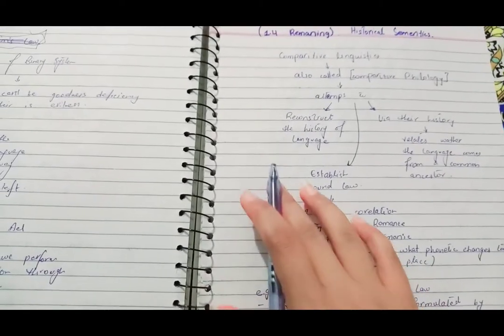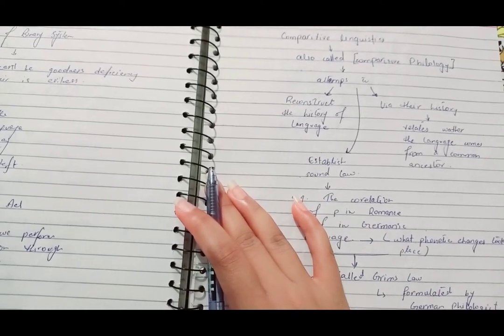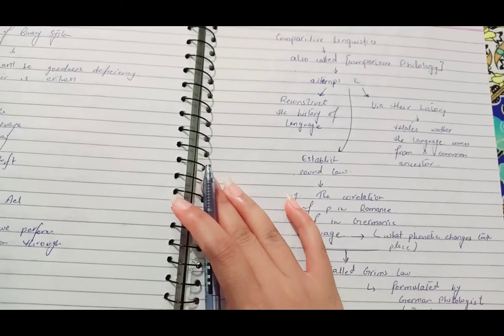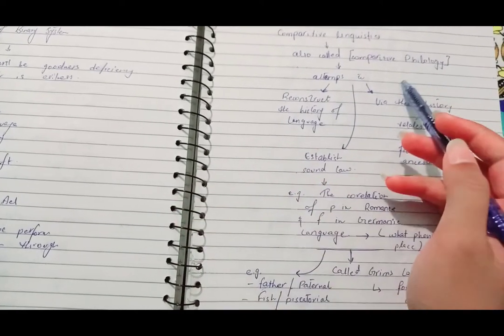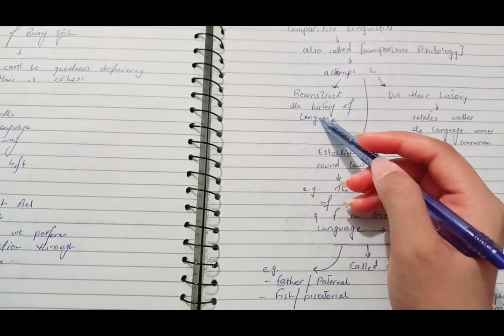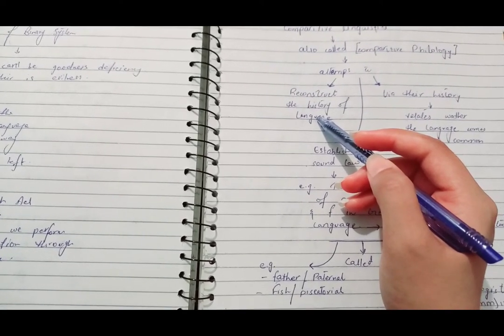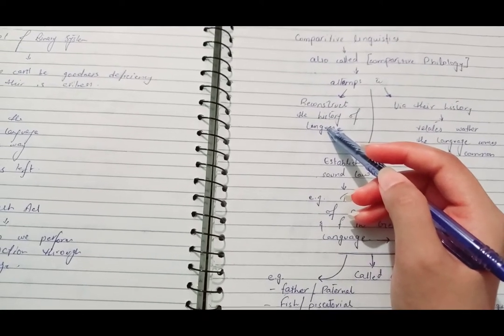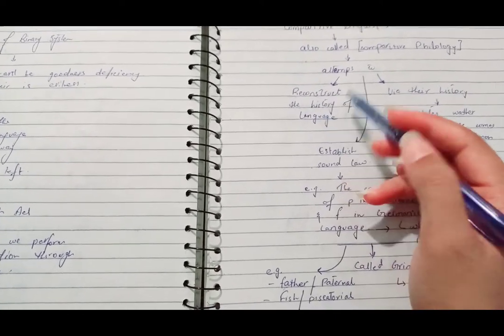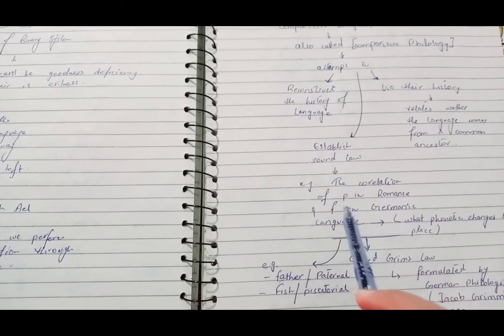Next, historical linguistics deals with comparative linguistics as well. Comparative linguistics is also called comparative philology and it attempts to deal with the reconstruction of history of language.